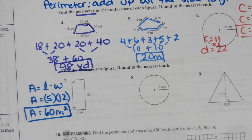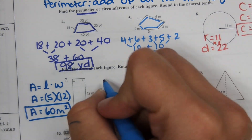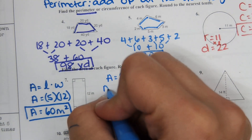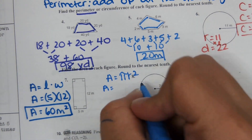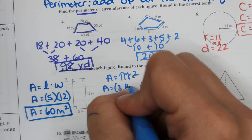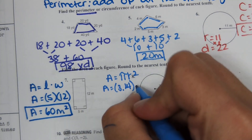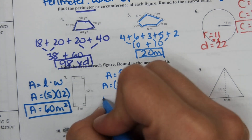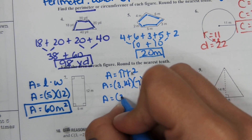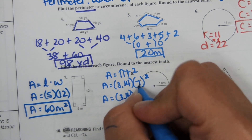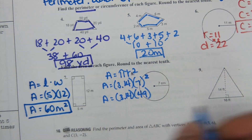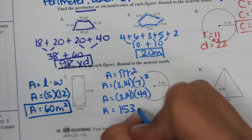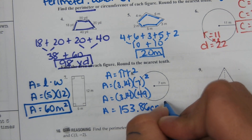For number 8, area of a circle — the equation is pi r squared. We'll use 3.14 for pi. Remember to follow order of operations: 7 times 7 is 49, and then area equals 3.14 times 49, which is 153.86 centimeters squared.